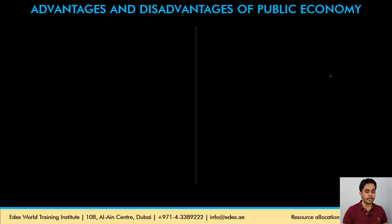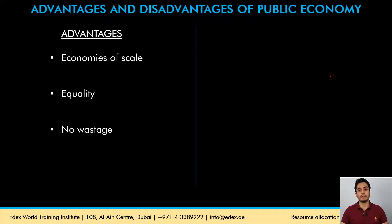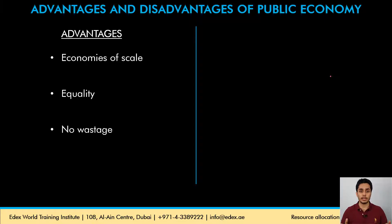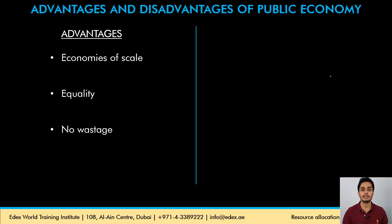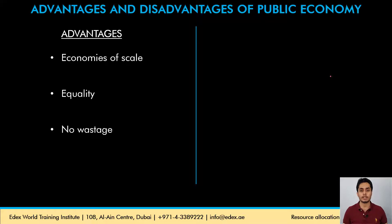Now let's understand the advantages of a planned economy where the government is in control. The first advantage is economies of scale — when goods are produced in bulk quantities, the average cost of production reduces. If you produce or sell goods in bulk, you are bound to reduce your average cost of production. When the government produces goods for the entire economy, they can reduce the cost of production, which translates into lower selling prices for consumers, and ultimately society benefits.